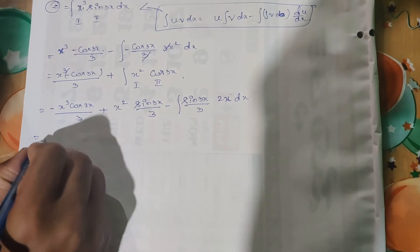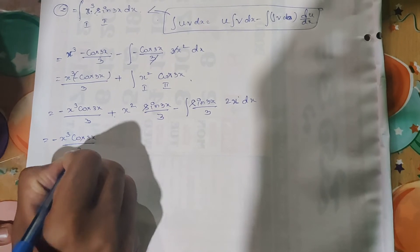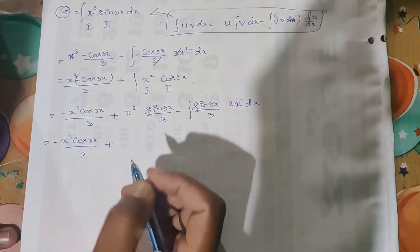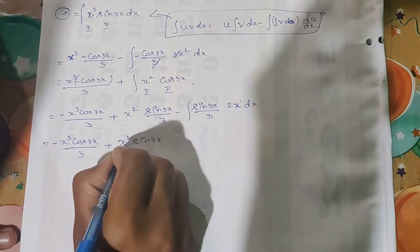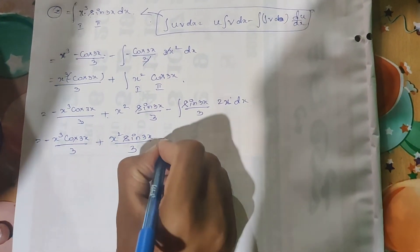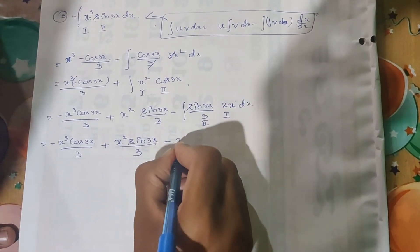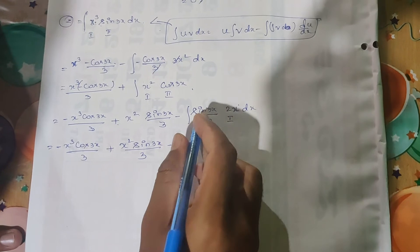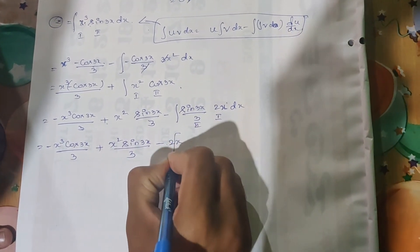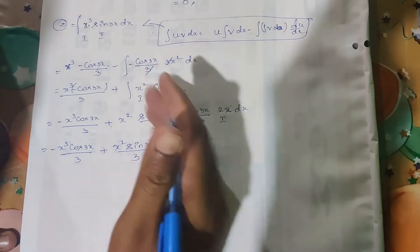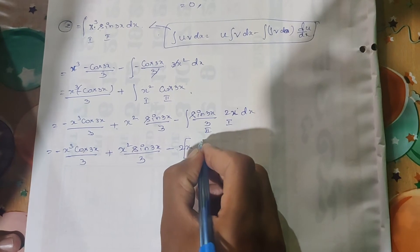Observing here: the first part gives minus x to the power of 3 cos(3x) divided by 3, plus x squared sin(3x) divided by 3. Then minus, and taking 2 as common — so we have 2 by 3 outside — with first function x and second function sin(3x).